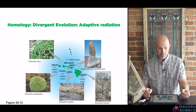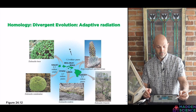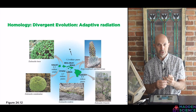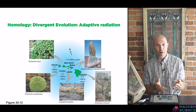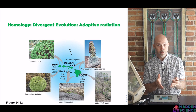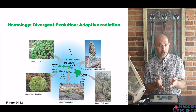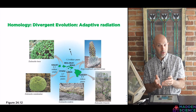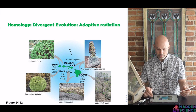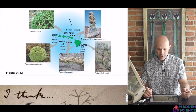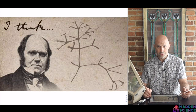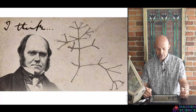Another example, terminology-wise, is homology or divergent evolution or adaptive radiation — here in the Hawaiian Islands with plants, very similar to what you saw on the Galapagos Islands with finches. And this is indeed what Charles Darwin was drawing with his original tree of life.